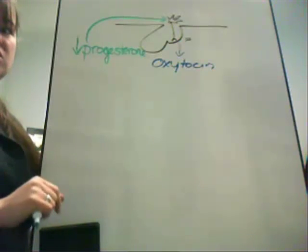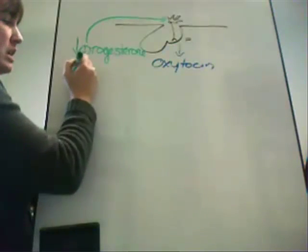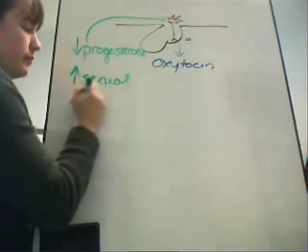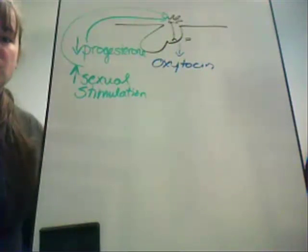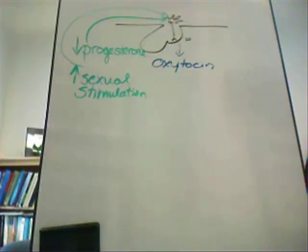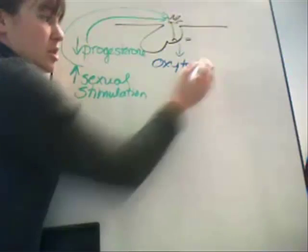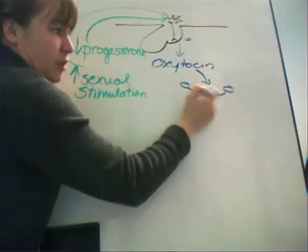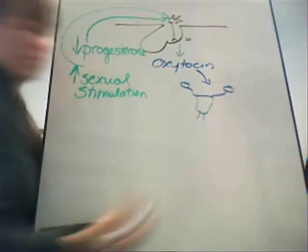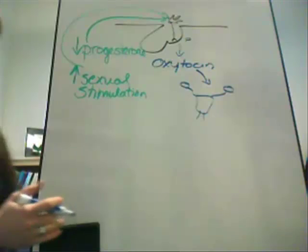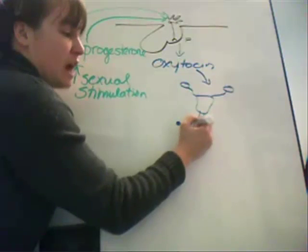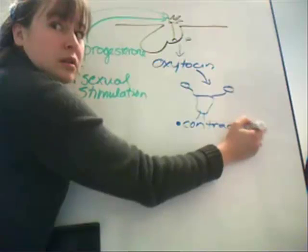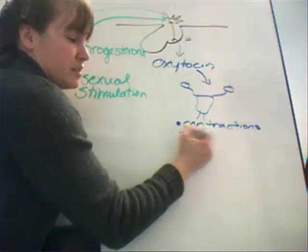Any time there is increased sexual stimulation, this will also cause the hypothalamus to begin the release of oxytocin. When oxytocin is released into circulation in the female, it targets the uterus — connected via fallopian tubes to the ovaries. In the non-pregnant female, oxytocin targets the uterus at the end of a 28-day menstrual cycle and causes contractions.